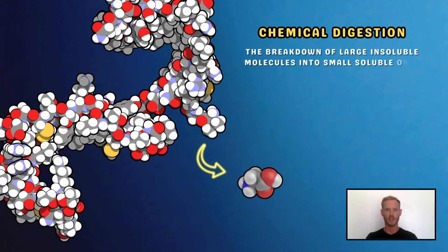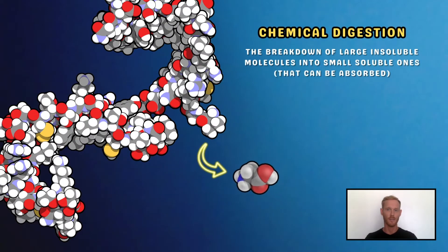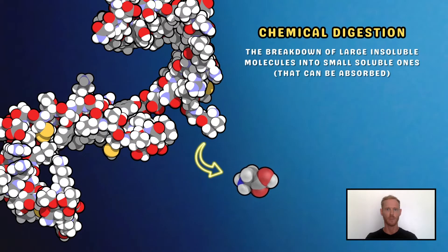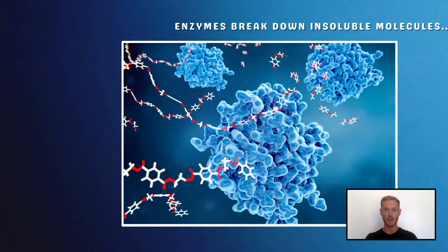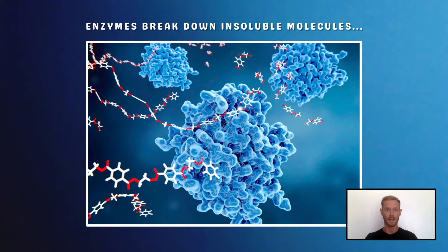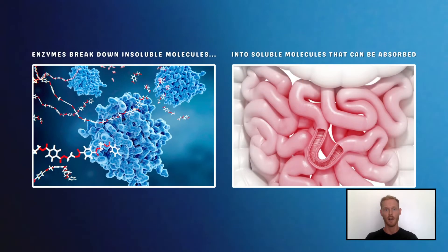Chemical digestion is defined as the breakdown of large insoluble molecules into small soluble ones that can be absorbed and utilised by the body. Enzymes secreted by glands break down solid food into a solution of dissolved particles that are small enough to pass through the epithelial lining of the small intestine and into the bloodstream.